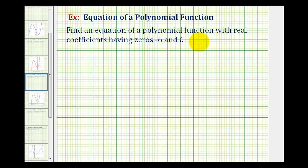We want to find an equation of a polynomial function with real coefficients having zeros negative six and positive i. So there are two important things to remember about this problem.